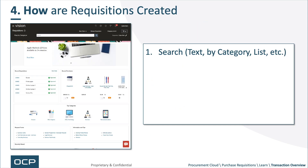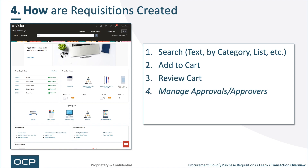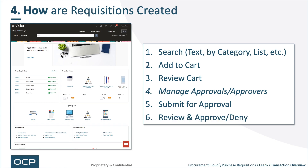How are requisitions created? We'd like it to be by search — search by text, browse within the category listing, shop by category (there are a lot of parallels to Amazon), or use a shopping list. You find your pre-negotiated catalog content, add it to your cart, then optionally manage approval — you can see who's going to be an approver, add an FYI, or add an extra approver. Then you submit your cart for approval, and the requester's approver will approve or deny the cart.